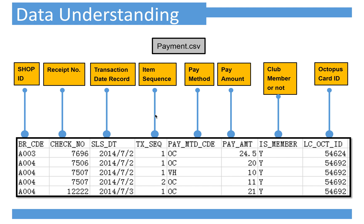Next is the payment method. OC means octopus card and VH means another method to pay the bill. Next is the amount of that product. Then club member or not — Y means yes and N means no. The last column is octopus card ID.